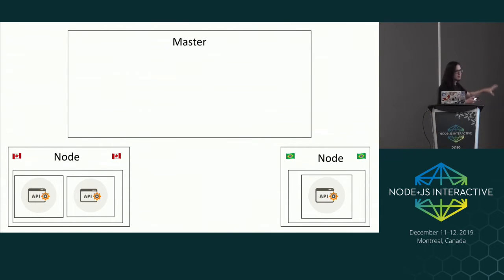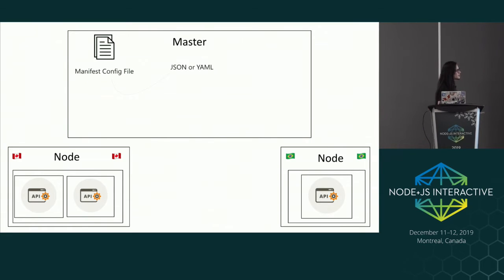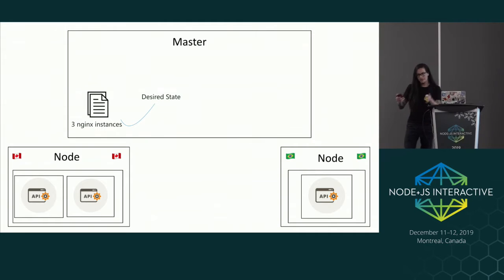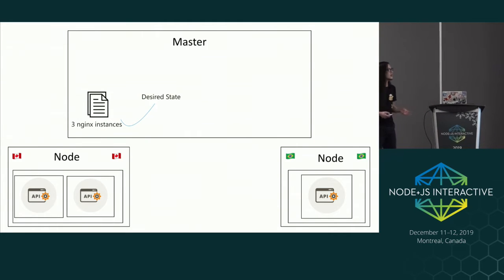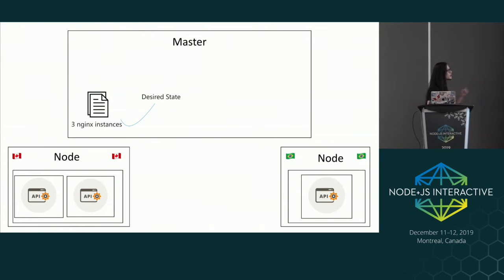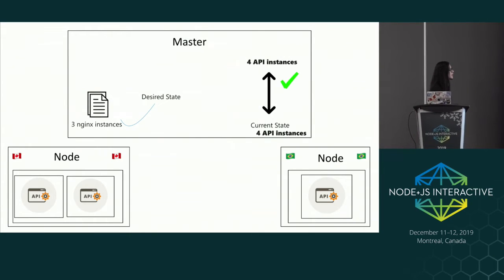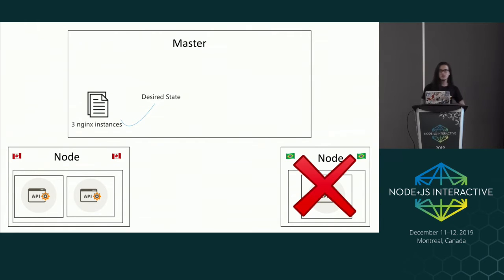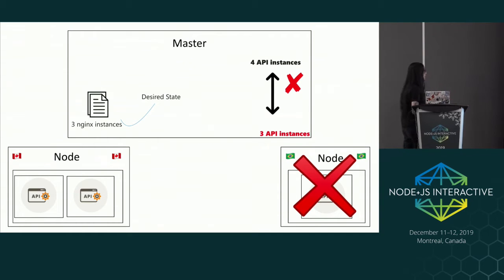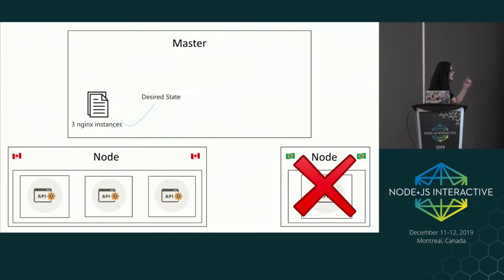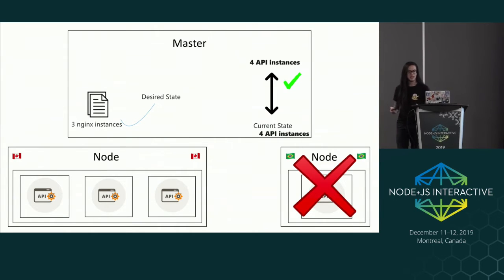Let's see how the master behaves compared to other approaches. We define a master manifest config file — a JSON or YAML file — with a desired state, for example three instances: two in Canada and one in Brazil. If the server in Brazil is not responding, Kubernetes will make some checks and schedule a new instance to other nodes. The node in Canada will receive the missing pod, and we're back to the desired state.